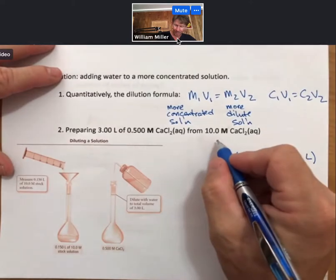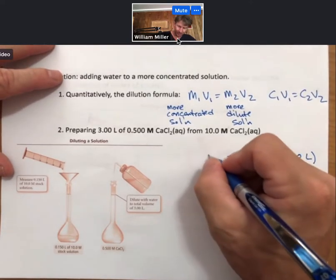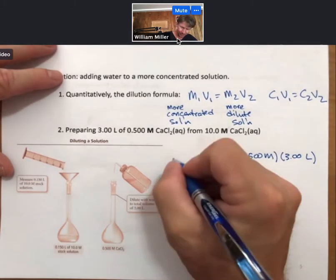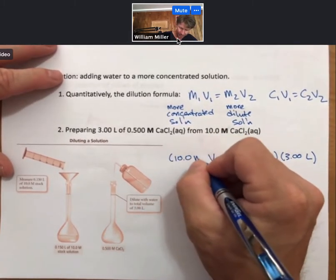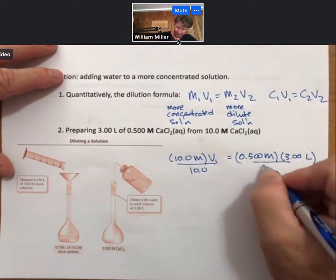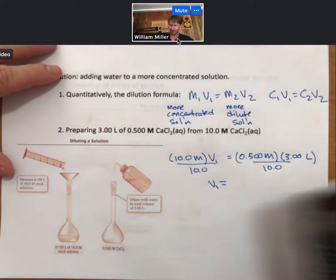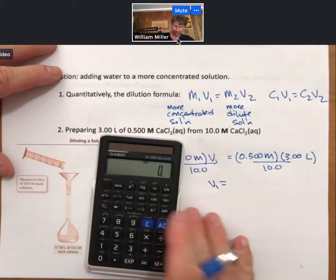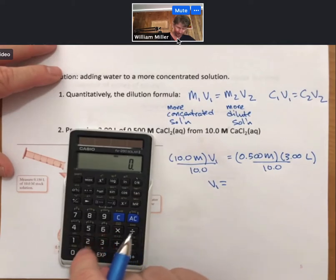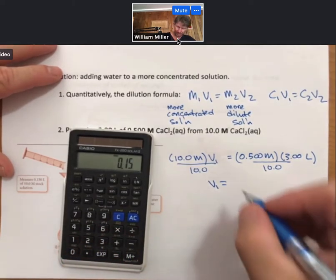And my M1 is going to be 10.0 molarity calcium chloride. We don't know our V1, like so. And then rearranging and solving for the volume of our initial component. 0.5 times 3 divided by 10, 0.15.